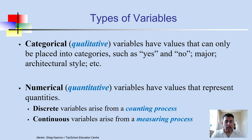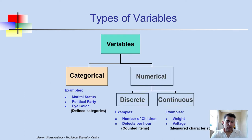We also have numerical variables, which are quantitative variables we can count or measure — for instance, weights or the number of children in a family. Numerical variables are divided into two groups: discrete variables, which arise from a counting process, and continuous variables, which arise from a measuring process. Examples of discrete include number of children and defects per product; examples of continuous include weight, voltage, and age.